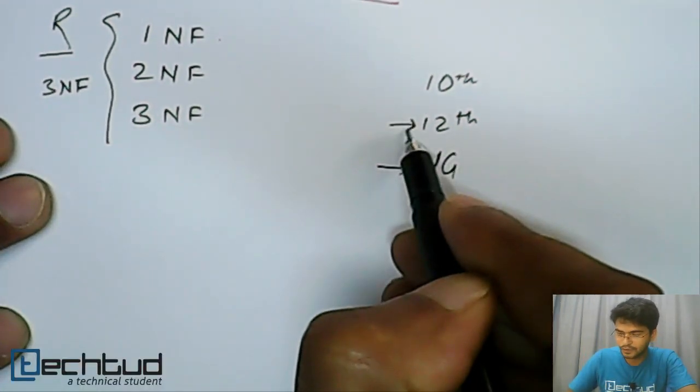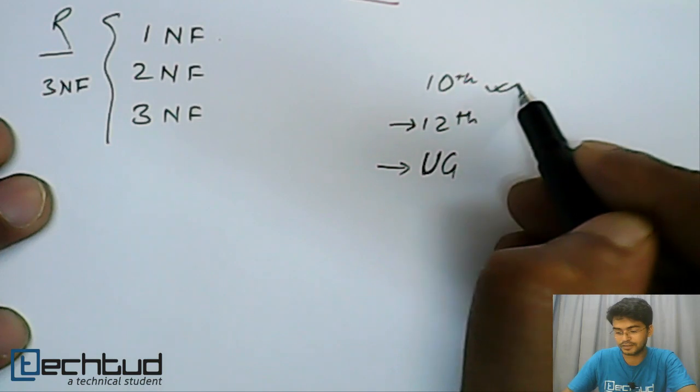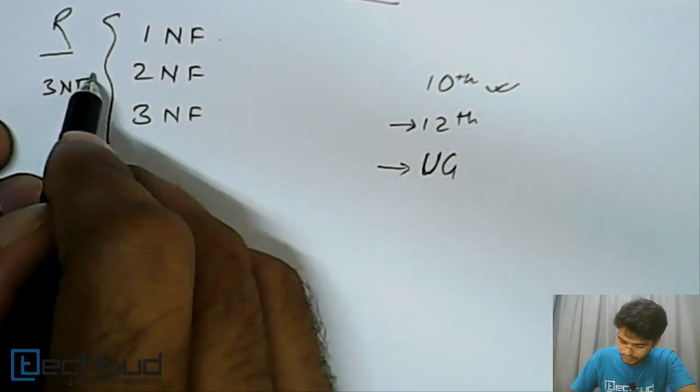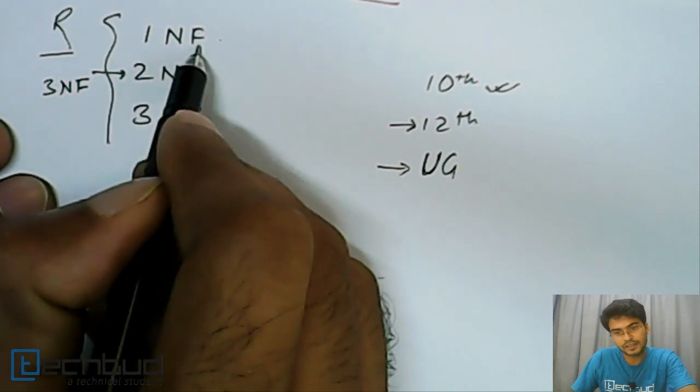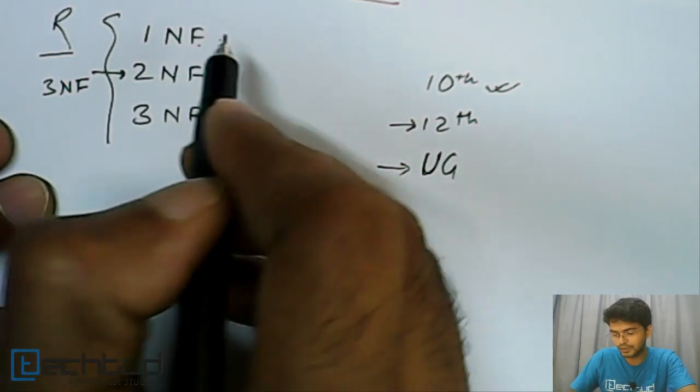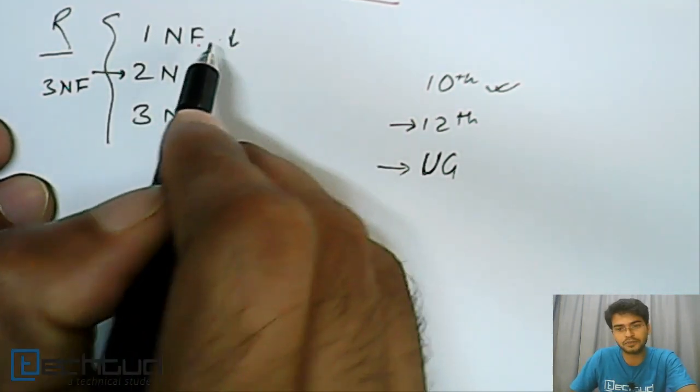Student is 12th pass only if he is 10th pass. Similarly, a relation will be in second normal form only if it is in first normal form. The criteria of first normal form has to be satisfied first.